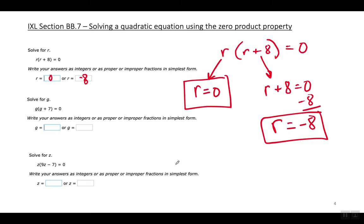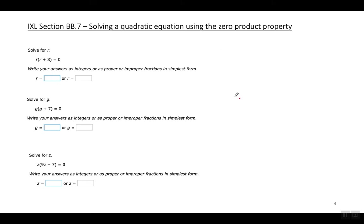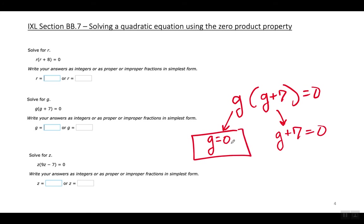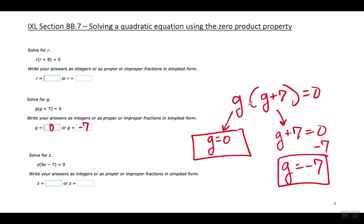The next example: G times G plus seven equals zero. Set each factor equal to zero and solve for G. G is already by itself so G equals zero. In the other factor, move the seven to the right, so G equals negative seven. Whenever you have a variable by itself as a factor, it's always going to equal zero.